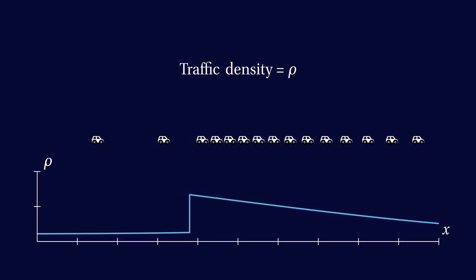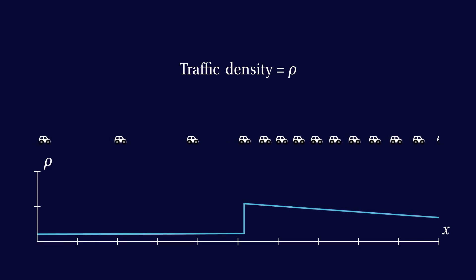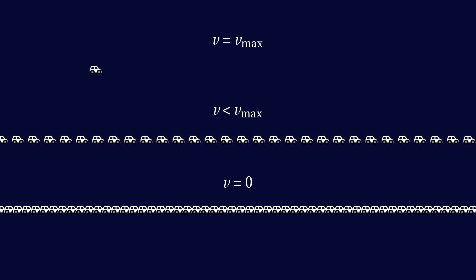A first step is to estimate how fast a car would be driving, depending on the density of the traffic it's in. A fair assumption is that the denser the traffic is, the slower the cars will be. When traffic is very light, cars drive at their maximum speed, Vmax. When there is some traffic, cars drive at some slower speeds. And when traffic is bumper to bumper, the cars don't move at all.